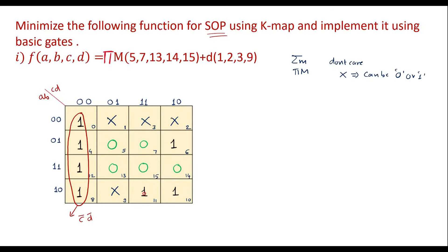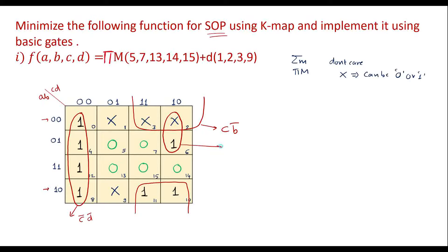Using the x (don't care) cells along with the 1s, we can form a quad. The common column factor is C, and between the rows the common factor is B̅, giving B̅C. There is one more 1 remaining which can be paired; between the rows the common factor is A̅, and the column gives CD̅, yielding A̅CD̅. Therefore the simplified expression is F = C̅D̅ + B̅C + A̅CD̅.